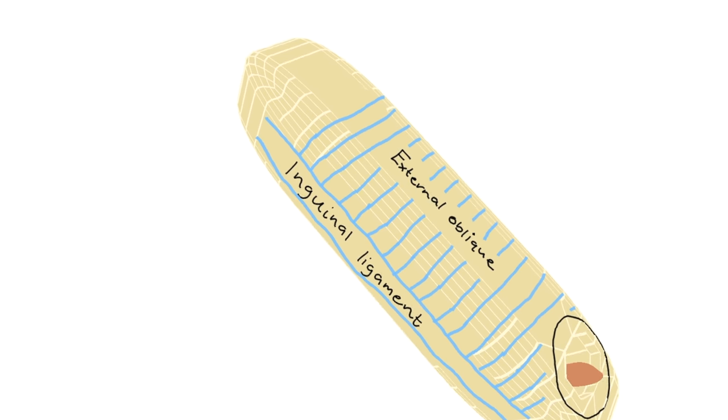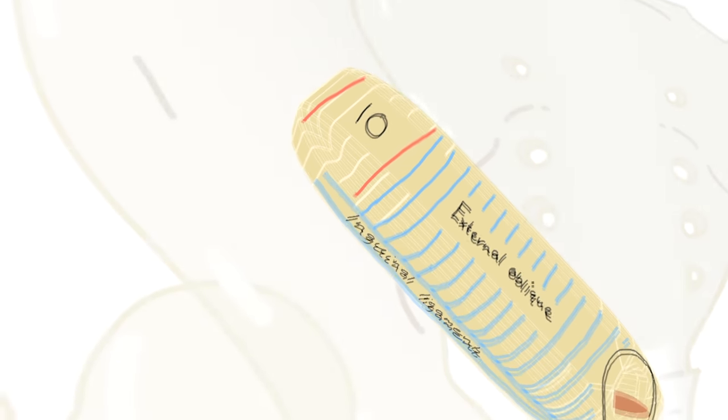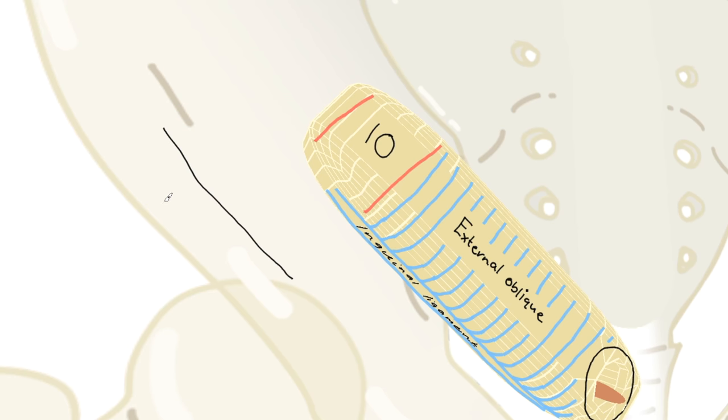And further out laterally, the anterior wall is reinforced by the next muscle of the abdominal wall, internal oblique, or IO. For our purposes, this starts at the iliac crest, this bony prominence here. It moves up beside the external oblique and is joined here by the next muscle of the abdominal wall, which begins further lateral on the iliac crest. That's transversus abdominis, or TA.